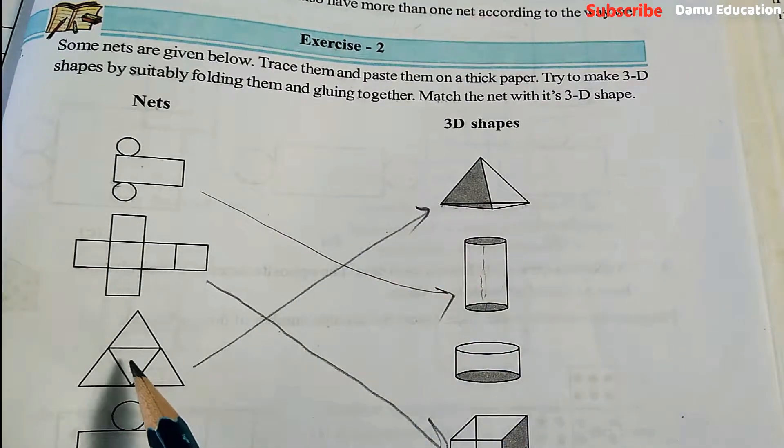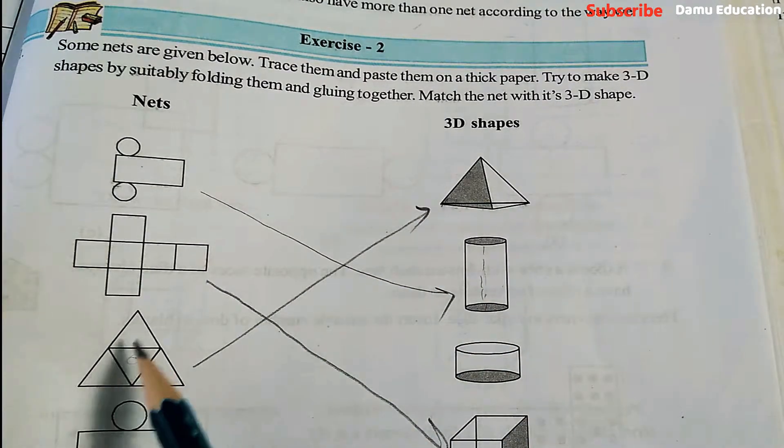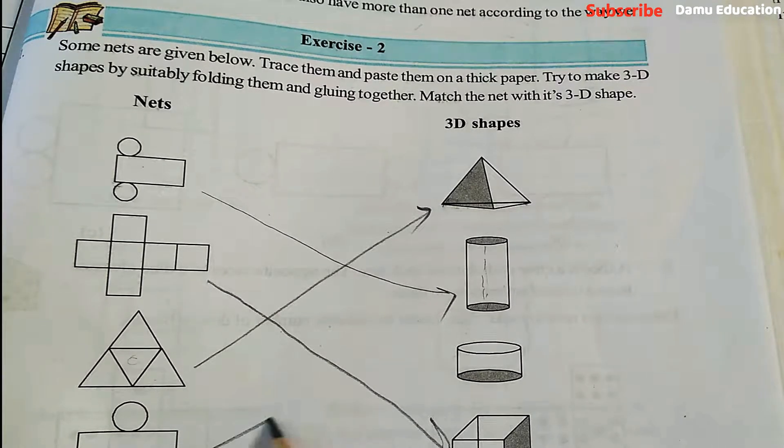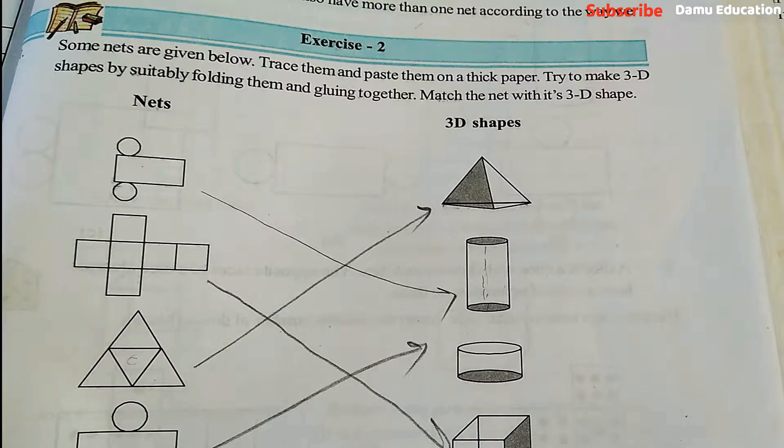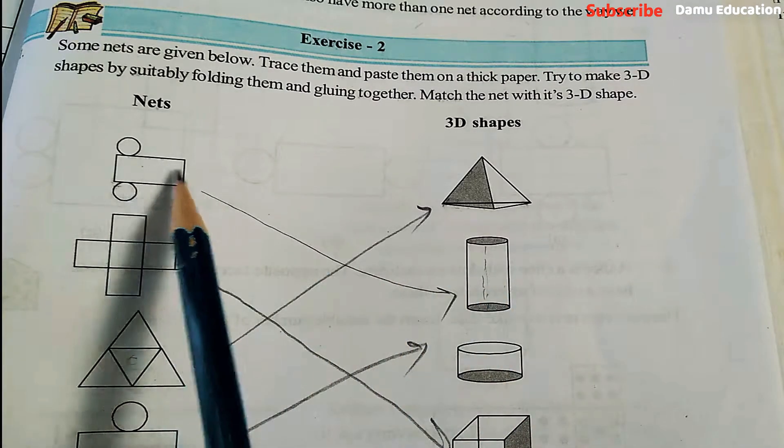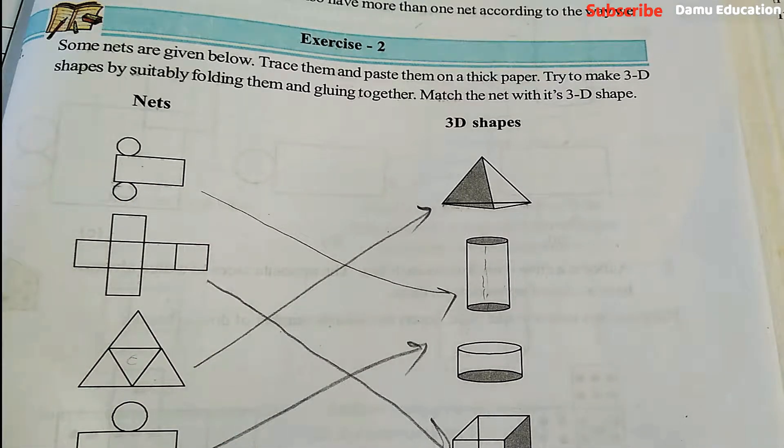See, it is a surface that will fold like this. This is for cylinder. This is also a cylinder. Why? Because this is a flat surface. This length is more, this one is somewhat small.